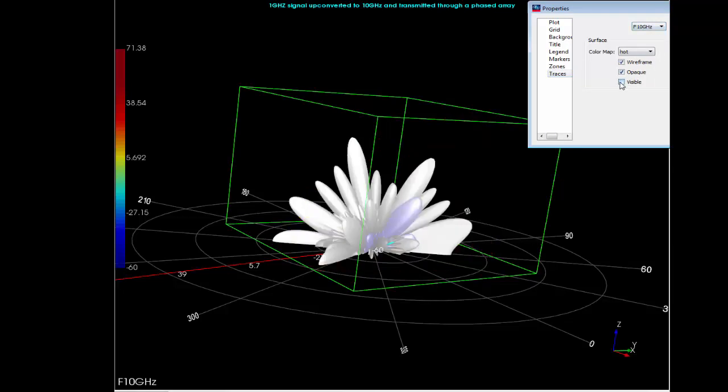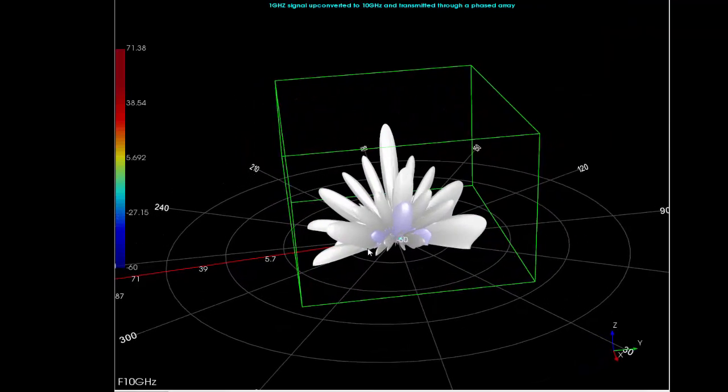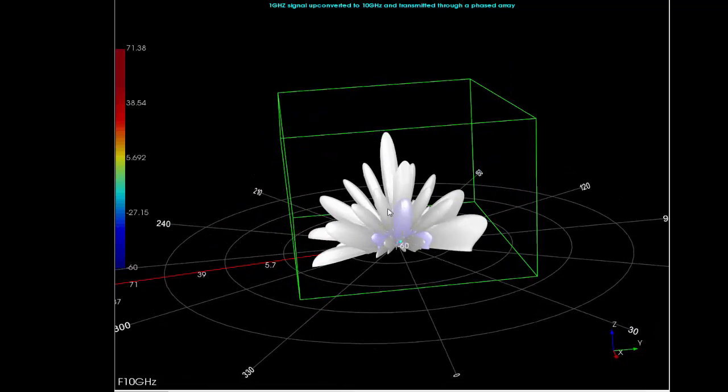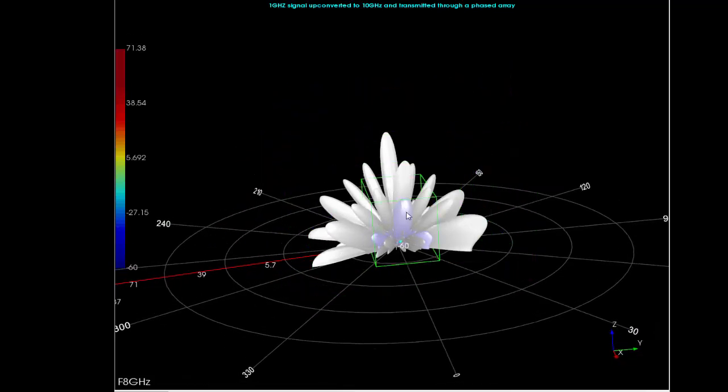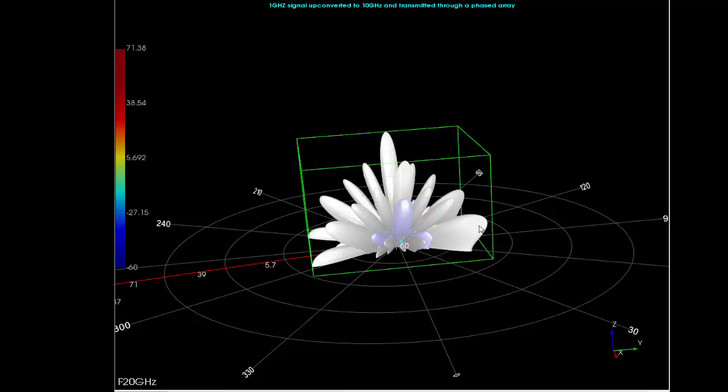By looking at this, we know that there are spurious frequencies radiated in the far field. What we are interested in is actually to suppress these spurious patterns.